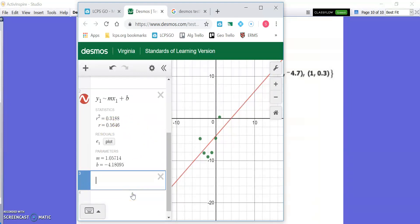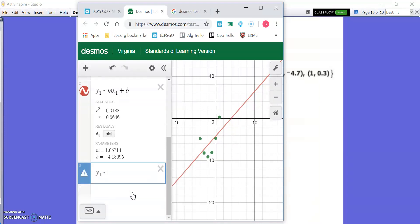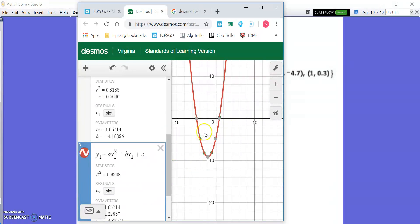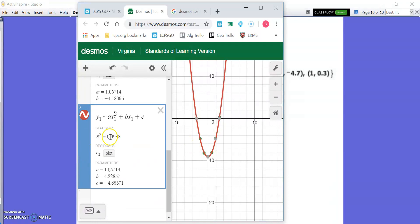If we do a quadratic regression, you would do y sub 1 tilde, and type in the standard form of a quadratic equation: a times x sub 1 squared, plus b times x sub 1, plus c. That's the standard form for a quadratic equation. As soon as I type that in, do you see how it made this parabola right here that's almost perfect? It looks really good. If I want to get rid of the linear equation, I can just click this and it will go away. That looks really good.